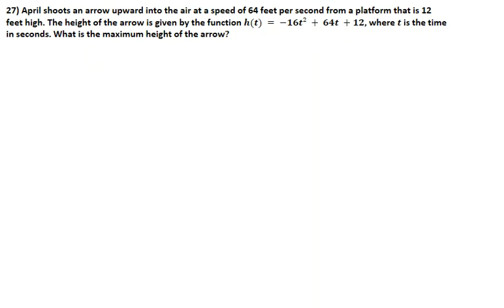So let's go ahead and draw a picture so we understand what we're looking at. We know that April is standing on a platform that is 12 feet high and she shoots an arrow that eventually will come down at 64 feet a second. It is asking us for the maximum height of the arrow, which will be the vertex of this graph.